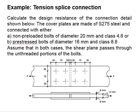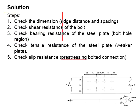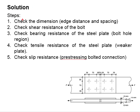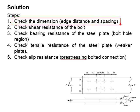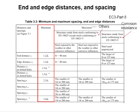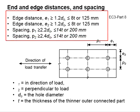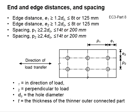These are the calculation steps to check for the tensile splice. First, we need to check for the dimensions, which are the edge distance and the spacing of the tensile splice. Referring to Table 3.3 in Eurocode 3, Part 8, the requirement for the spacing and edge distance of the tensile splice is given. From here, we need to determine E1, E2, P1, and P2.